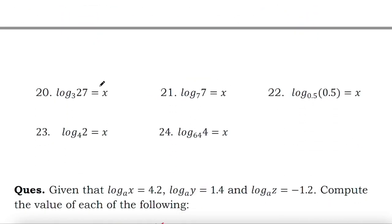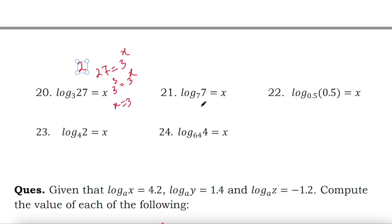For the next case, 27 equals 3 to the power x, and 27 means 3 cubed equals 3 to the power x, therefore x equals 3. For the case log 7 to the base 7, x equals 1 since log b to the base b equals 1. And log 0.5 to the base 0.5 equals 1, so x equals 1.